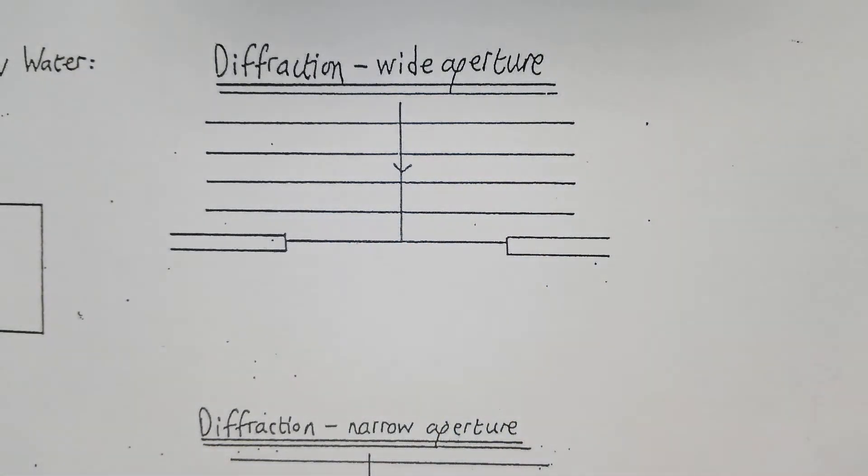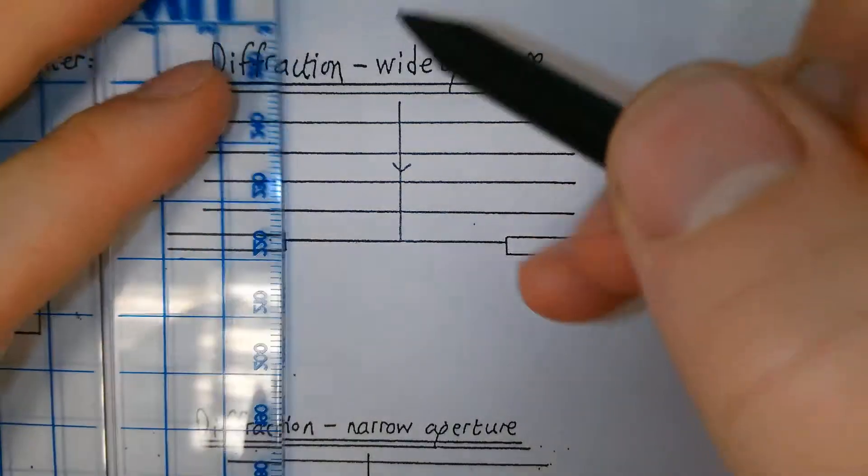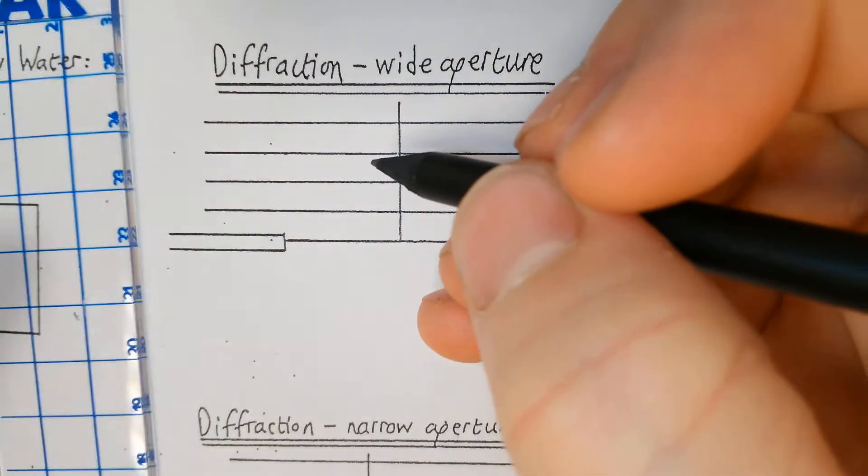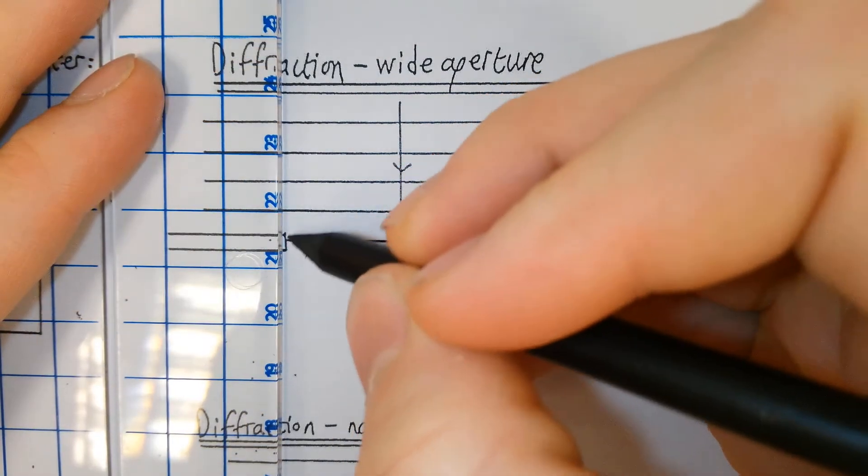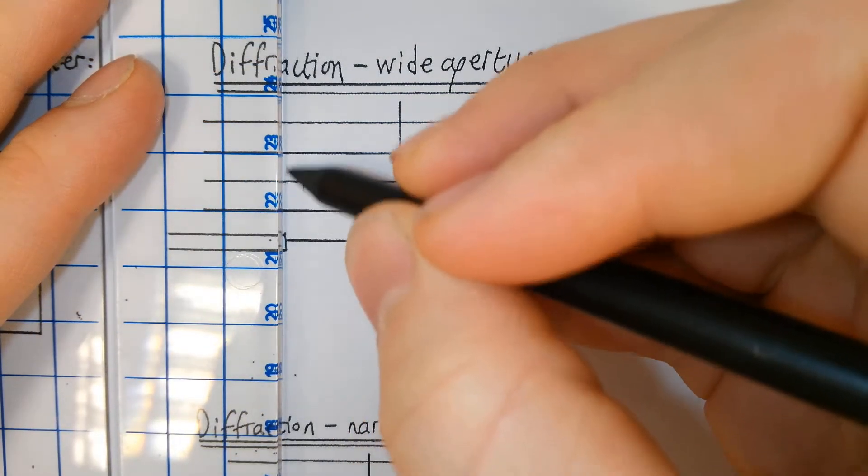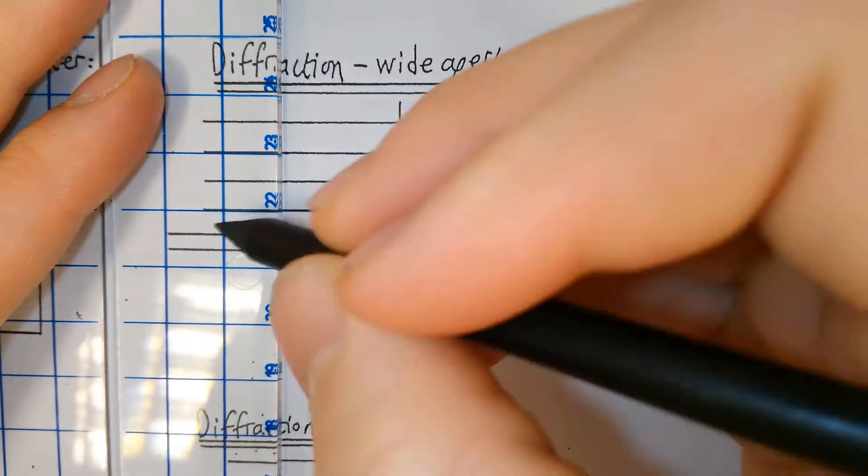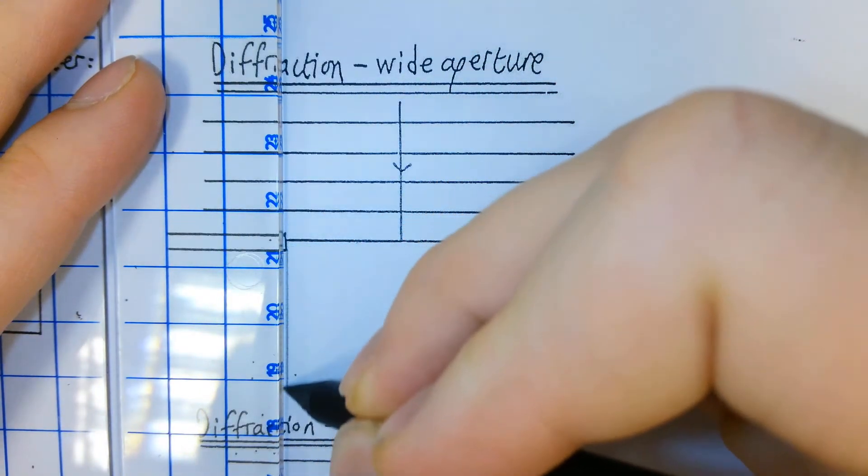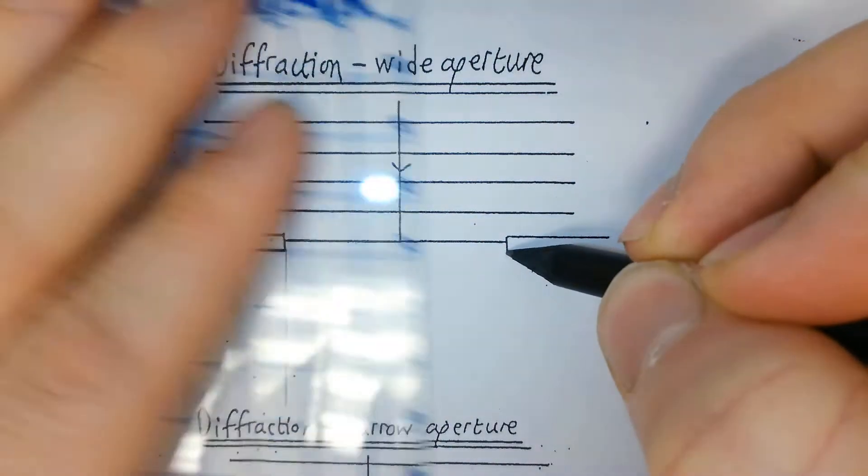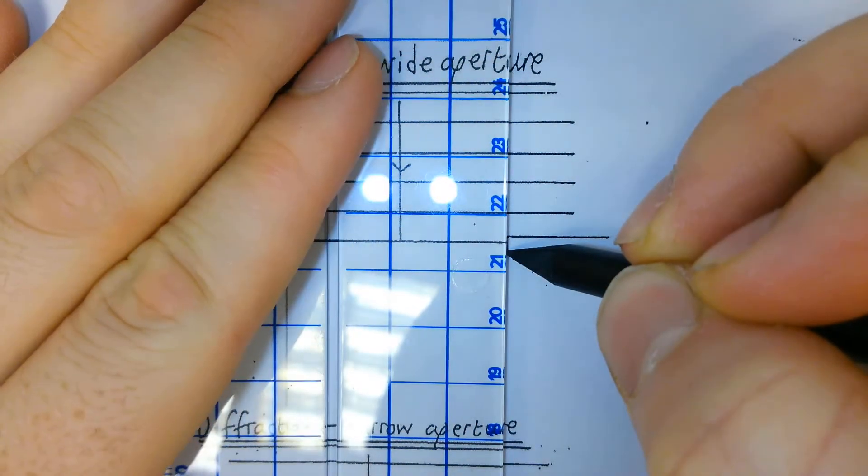So what we're going to do is make two construction lines, one here. I'm making sure that the line is parallel to the direction of travel of the wave but perpendicular to these wave fronts. Bring that line up there.